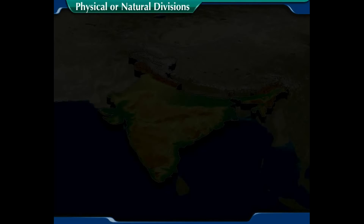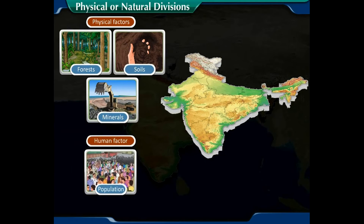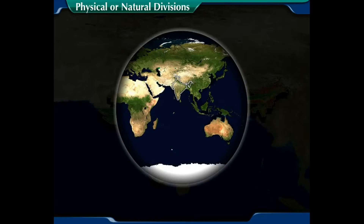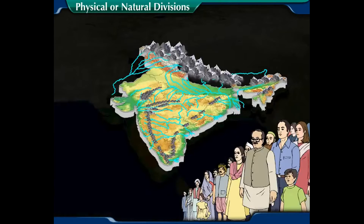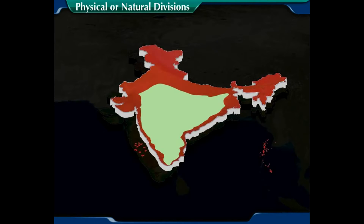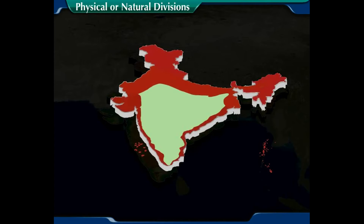Physical or natural divisions are identified based on physical and human factors. Based on the physical factors, we can identify some homogeneous regions in India, known as physical or natural divisions of India. India is a huge country with great diversity in geographical conditions due to its large extent. A large area of our country is covered by the old plateau, while other parts which are relatively younger differ in physiographic conditions.